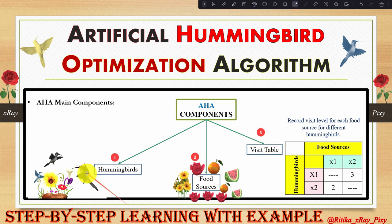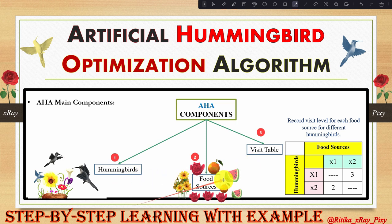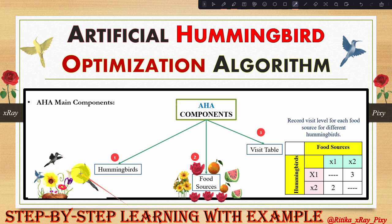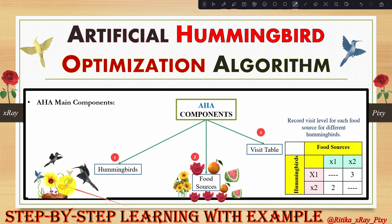In real life, hummingbirds have great memory — they can remember every flower and how long it will take to refill a flower. In the Artificial Hummingbird Algorithm, for simplicity, each hummingbird is always assigned to a specific food source. The hummingbird and its food source are assumed to share the same position.